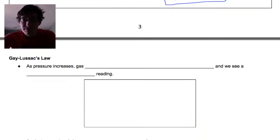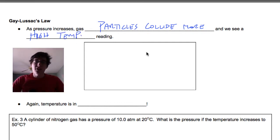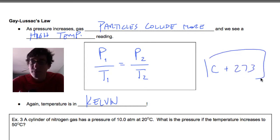And then finally, the third one is Gay-Lussac's Law. It says as the pressure increases, gas particles collide more, or they interact more, and we see a higher temperature. As stuff starts to interact and collide more, we see the temperature reading go up. We're going to be relating pressure one over temperature one equals pressure two over temperature two. Again, we need to remember temperature is in Kelvin. So we do C plus 273, never forget to do that.